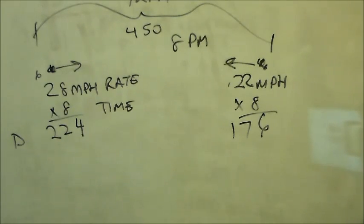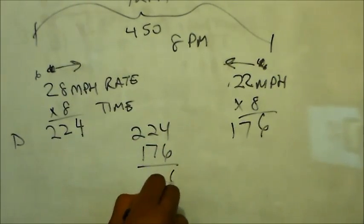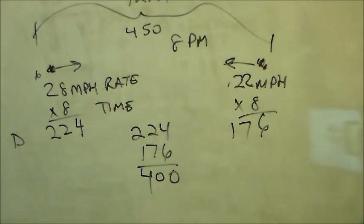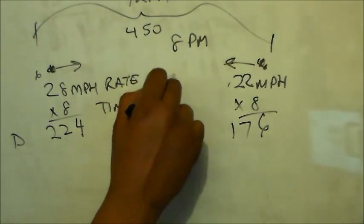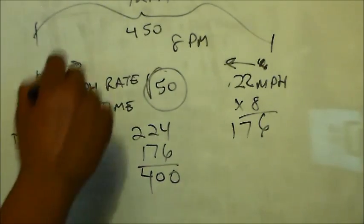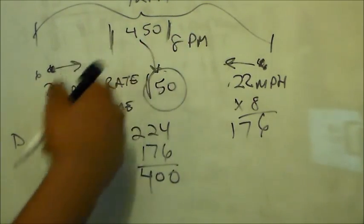We add the two distances: 224 plus 176 equals 400. So this boat moved 224 miles in from its starting point, and this boat came in 176 miles, and the distance they are apart from each other now is 50 miles apart.